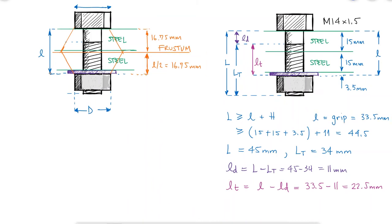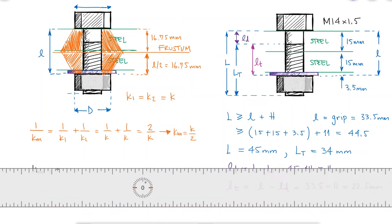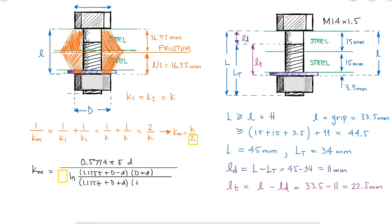Since you'd probably be using a steel washer, both members, one above and one below the frustum, will be the same, and the total member stiffness will be equal to the expression for the member stiffness of one member divided by two.